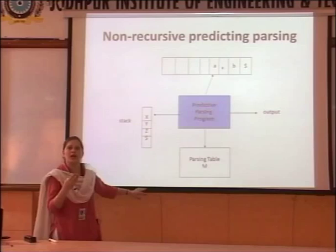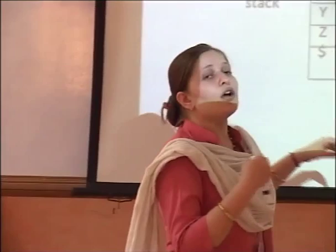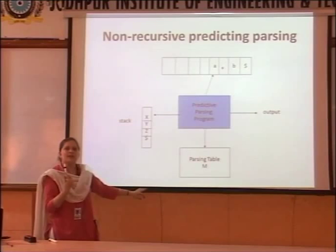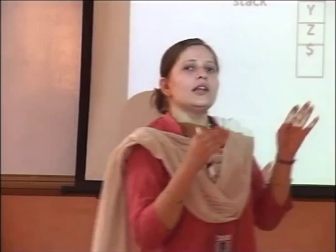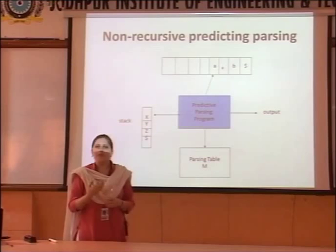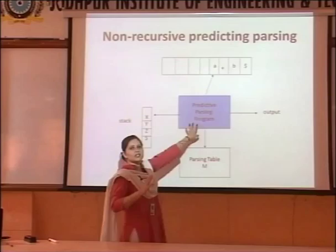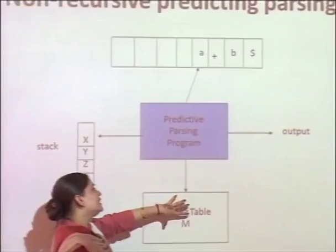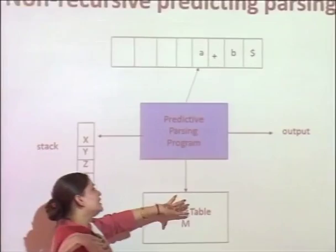We have seen how top-down parsing is done, starting from the starting symbol of the given grammar set and moving towards its leaf nodes, and how we successfully parsed the given input string. Now let us move towards the logical concept of non-recursive predictive parsing. Non-recursive predictive parsing uses the concept of predictive parsing in which all actions have been predefined by the predictive parsing program. This parsing technique uses four components: the predictive parsing program, the input buffer, a stack, and a parsing table with output.